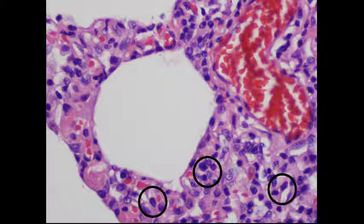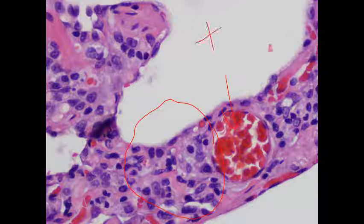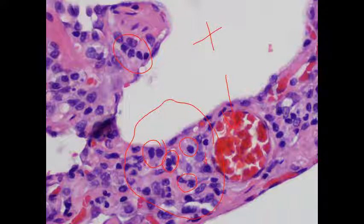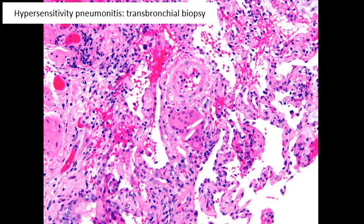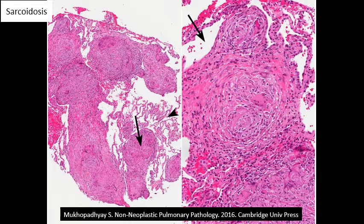At very high magnification, the cells within the alveolar septa are confirmed to be mostly lymphocytes, as shown by the circles. Another picture shows a capillary, the alveolar septa, the airspace, and within the alveolar septa are several lymphocytes — this is the hallmark of hypersensitivity pneumonitis. There is also a plasma cell visible. This disease can also be diagnosed on transbronchial biopsies — here a multinucleated giant cell with inclusions and interstitial lymphocytes in the background are clearly visible.